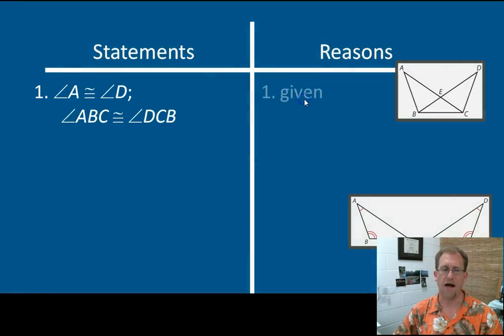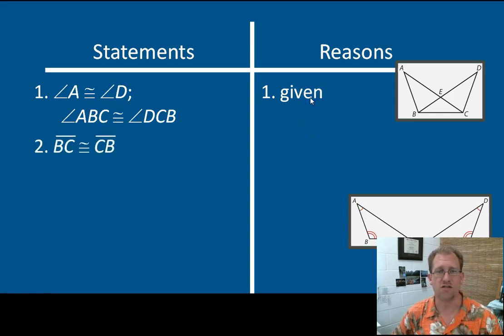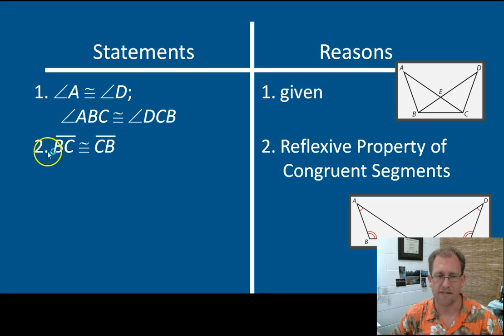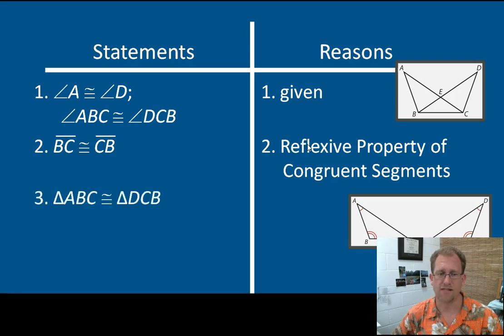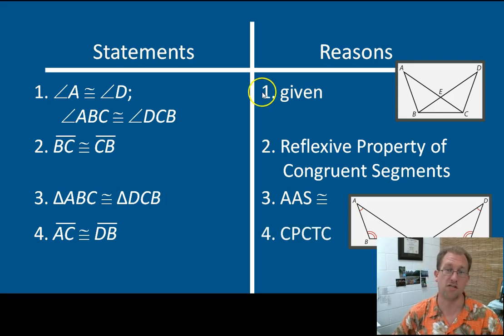Here we go. I have that these angles are congruent to each other. That's given. I can then just go straight to the reflexive and say BC is the same as CB. It's the same thing. It doesn't matter which way I write it, which way I'm going, which triangle I'm looking at. This segment is itself. And so, therefore, those two triangles are congruent because of angle-angle-side. And then those two segments that I'm looking for, AC and DB, are congruent to each other because of our good friend, corresponding parts of congruent triangles are congruent.